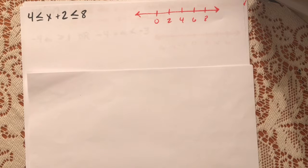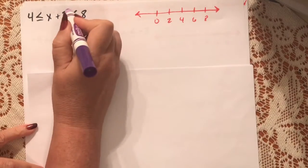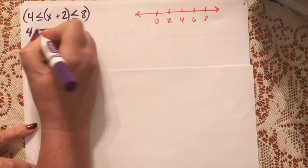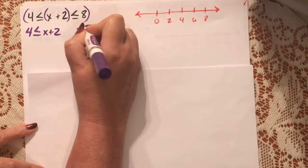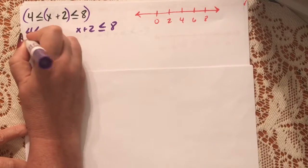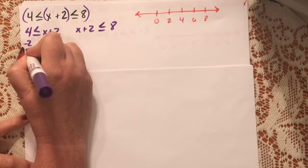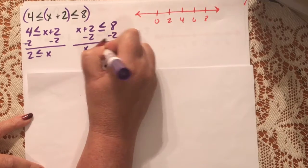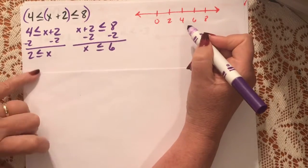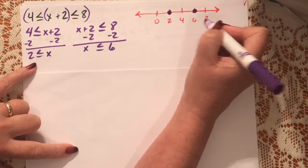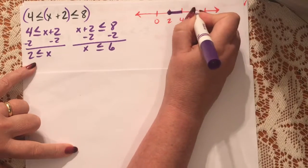They're asking us to solve intersections now. When you're given a problem like this, it's actually two problems to solve. We're going to solve: 4 is less than or equal to x plus 2, and x plus 2 is less than or equal to 8. Subtract 2 from both sides: 2 is less than or equal to x. Subtract 2 from both sides of the second: x is less than or equal to 6. When we graph it, we have a closed circle at 2 and a closed circle at 6, and x is larger than 2 and smaller than 6.